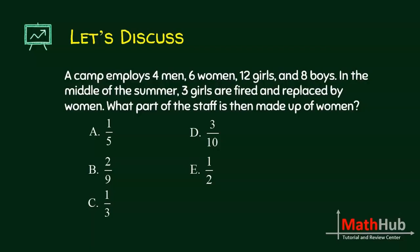Let us have some word problems involving fractions. A camp employs 4 men, 6 women, 12 girls, and 8 boys. In the middle of the summer, 3 girls are fired and replaced by women. What part of the staff is then made up of women?